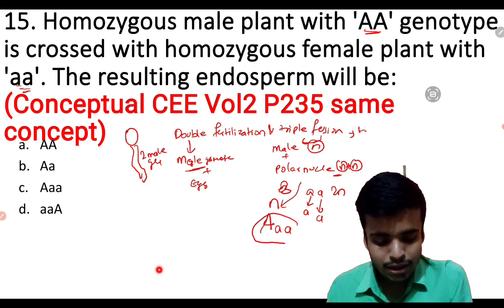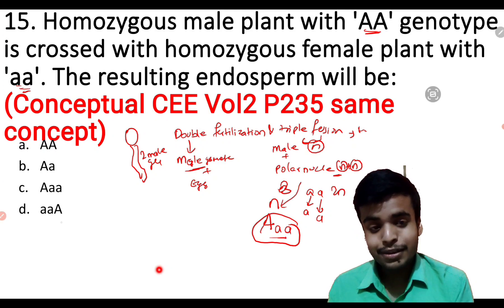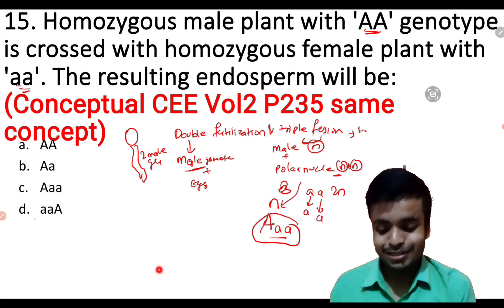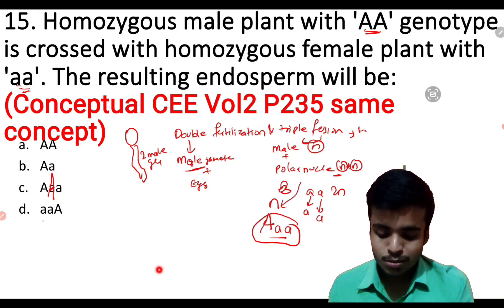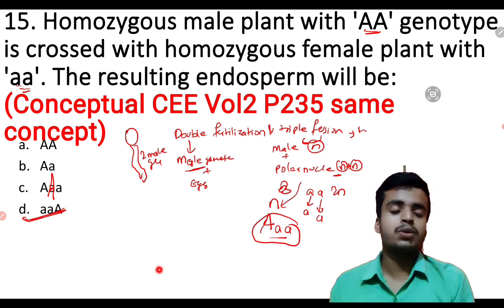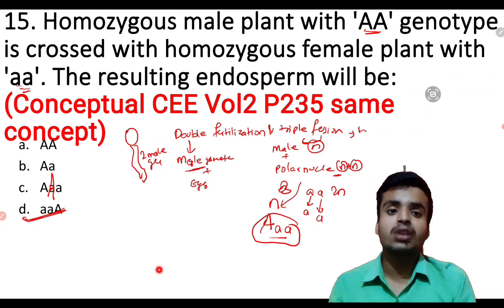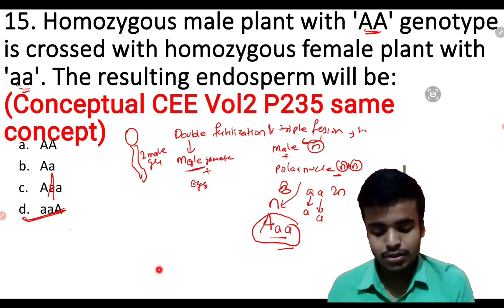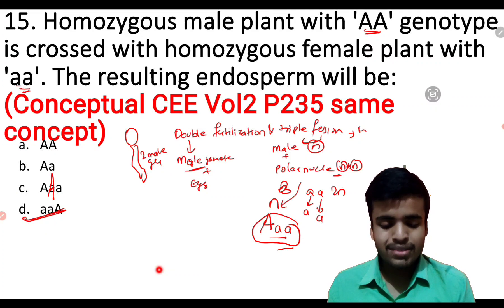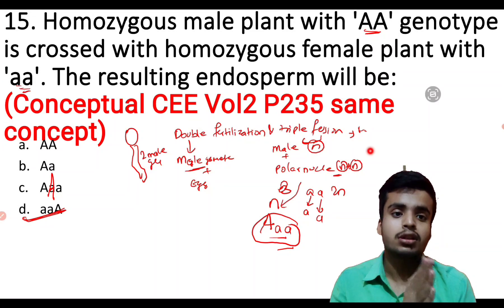The endosperm genotype would be Aa — one capital A and one small a — as the resulting industry genotype. So the option is present in Conceptual C, page number 235.